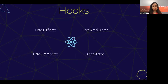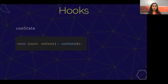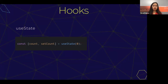The four different hooks I'm going to talk about today are useEffect, useReducer, useContext, and useState. useState helps manage local state — it replaces this.state in class components and can be used to share data within the same component. You use it by passing in an initial value, and what it gives you back is a state variable — in this case count — and a setter function, setCount. To update the state variable, you call setCount. You can initialize it with a constant like zero and update count by calling setCount with a new value.